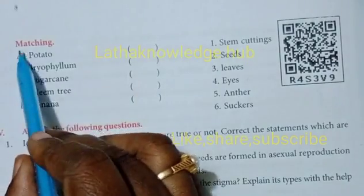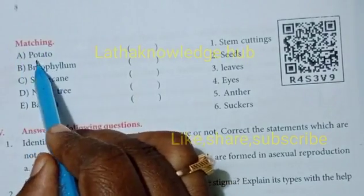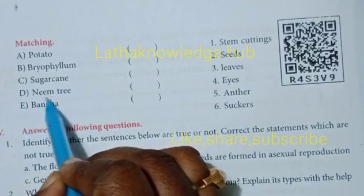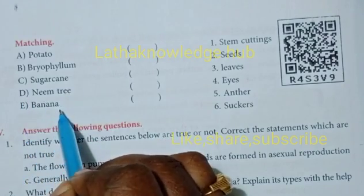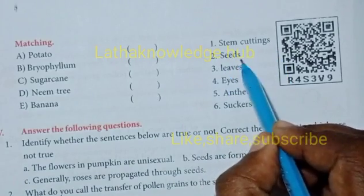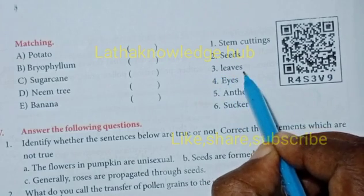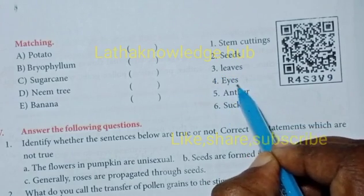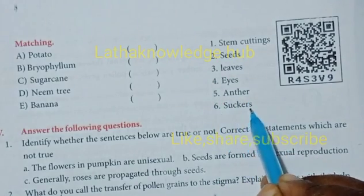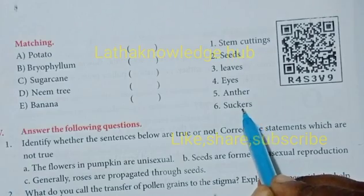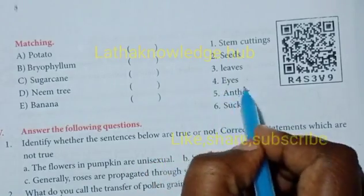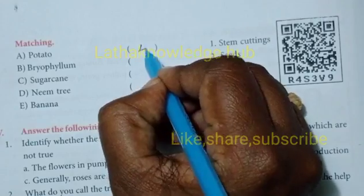Matching exercise. Match: a. Potato, b. Bryophyllum, c. Sugarcane, d. Neem tree, e. Banana with 1. Stem cuttings, 2. Seeds, 3. Leaves, 4. Eyes, 5. Suckers. Potato - how can potato reproduce? Yes, with the help of eyes. So write here 4.